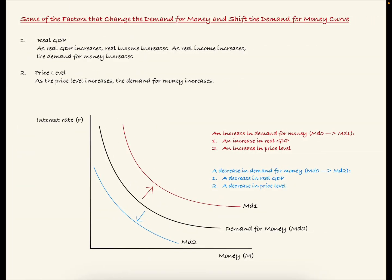On this slide, we're going to talk about some of the factors that change the demand for money and shift the demand for money curve. First is real GDP. As real GDP increases, real income increases, and as real income increases, the demand for money also increases. Second is price level — as the price level increases, the demand for money increases. We can see these effects graphically. Our original demand for money curve is MD0. The shift from MD0 to MD1 represents an increase in demand for money, caused by an increase in real GDP or an increase in price level.